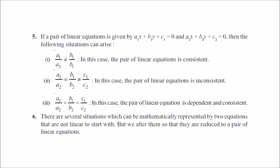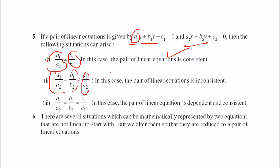Algebraically: if a1/a2 is not equal to b1/b2, the equations have a unique solution. If a1/a2 equals b1/b2 but not c1/c2, there are no solutions (inconsistent). If a1/a2 equals b1/b2 equals c1/c2, the equations are dependent and consistent with infinitely many solutions. These conditions cover all the various cases for pairs of linear equations in two variables.